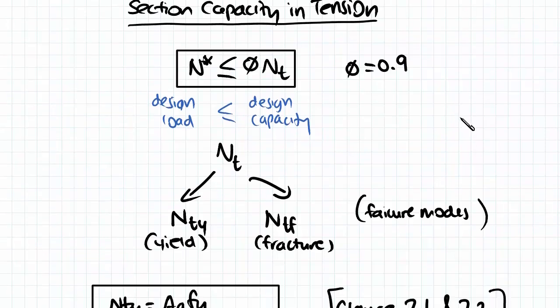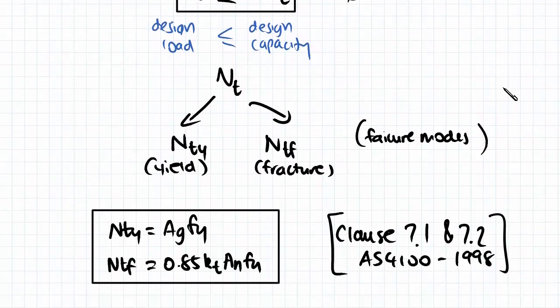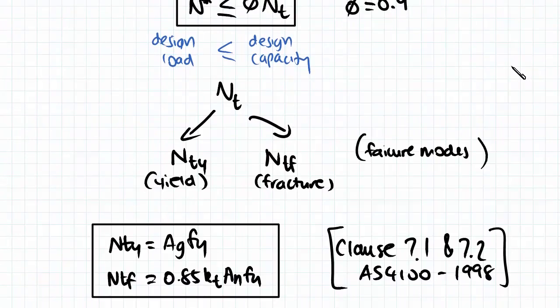So when we actually assess the section capacity in tension, we need to assess two failure modes: yield and fracture. Both of which have formulas as shown below, where the yield is the gross area times the yield stress,